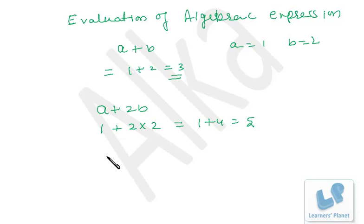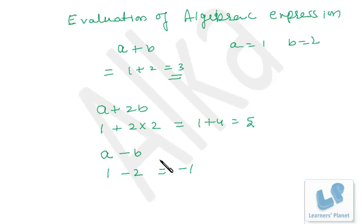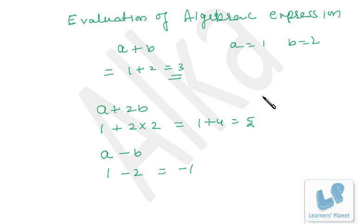For A minus B with A equals 1 and B equals 2, it's 1 minus 2, that is minus 1. No matter how difficult or lengthy an expression is, you just put in the values and get the solution easily — as long as you know BODMAS rules. Basic arithmetic operations must be clear.